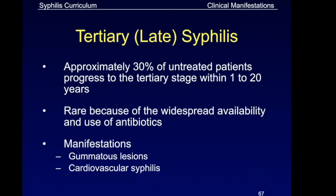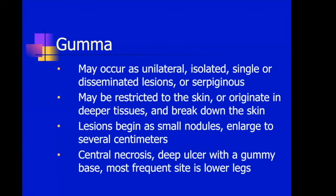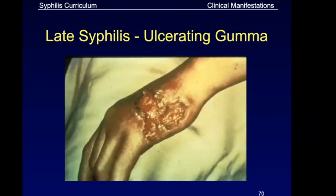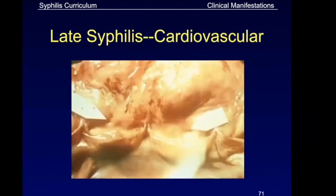Tertiary syphilis occurs in approximately 30% of untreated cases. It is very important to treat latent syphilis to prevent this complication. Manifestations include gummatous lesions — unilateral, isolated, single or disseminated lesions in the skin and deeper tissue with central necrosis and deep ulcers — and cardiovascular syphilis, which involves the heart. These are serious complications of untreated disease.